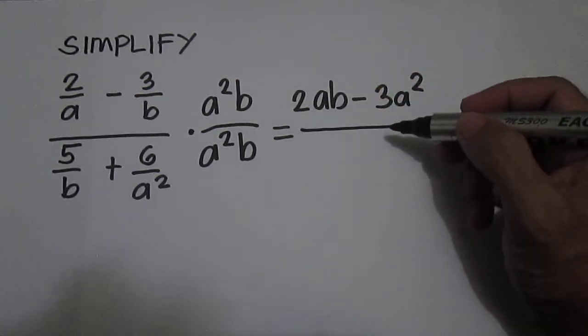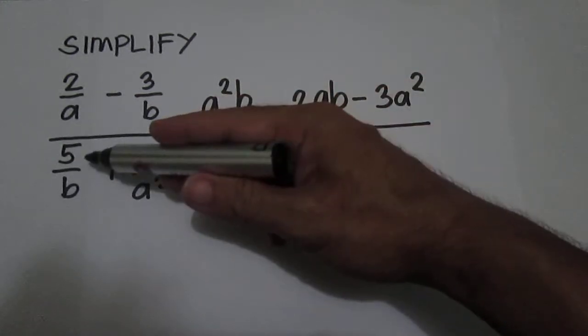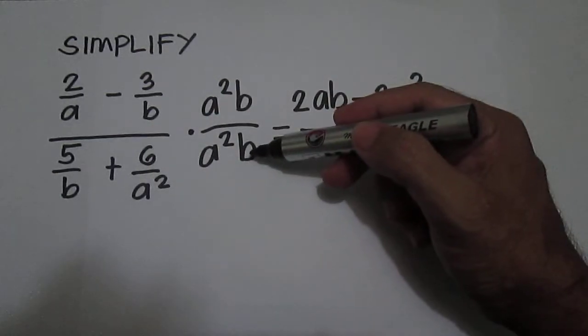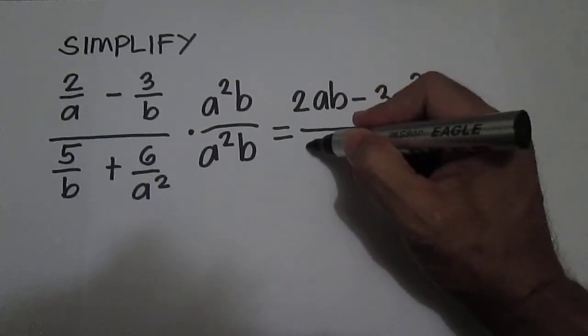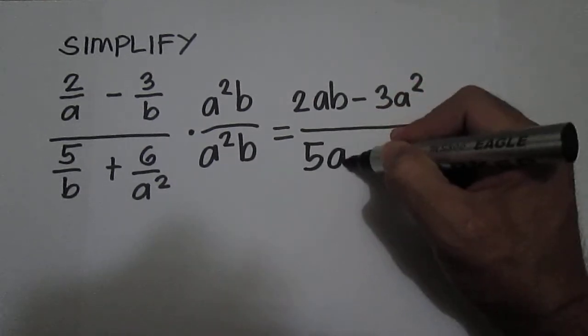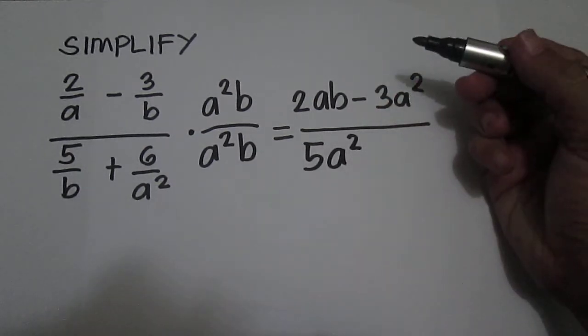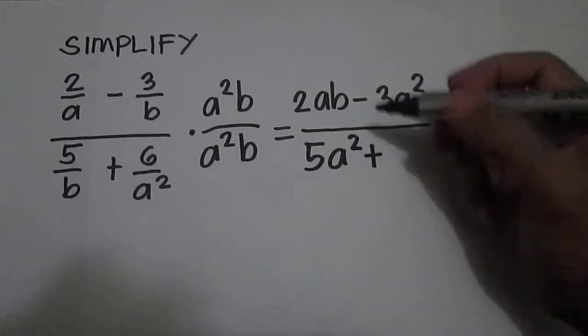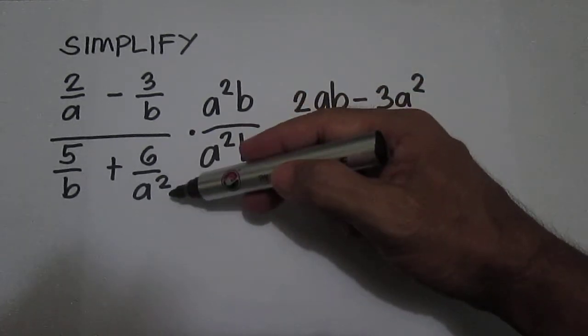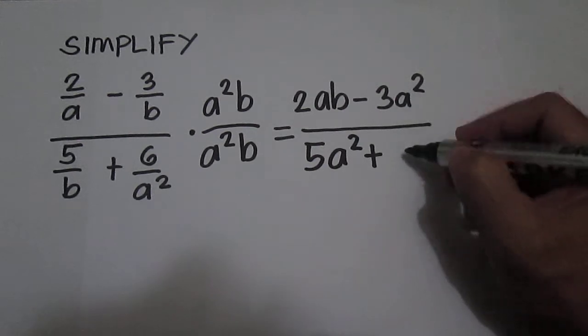All over 5 over b times a squared b is 5a squared plus 6 over a squared times a squared b is 6b.